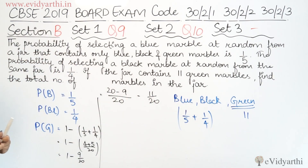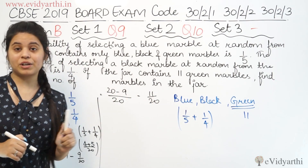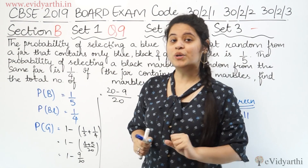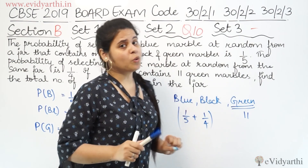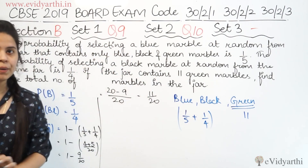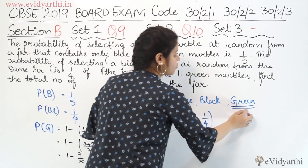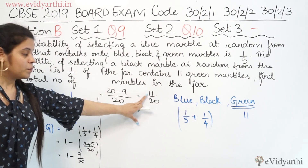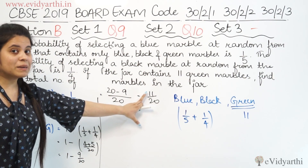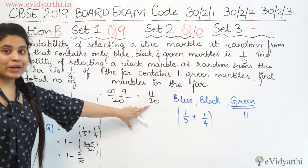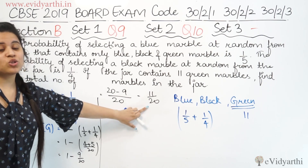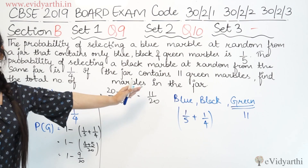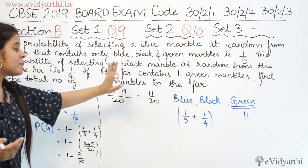So the probability of green marble is 11/20. Now, from this we can simply see that the number of green marbles is 11, and the total number of marbles is 20. This comes from favorable outcome upon total number of outcomes: 11/20.